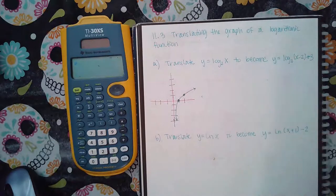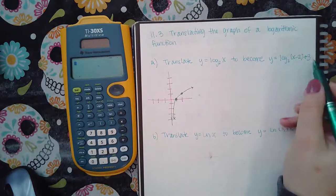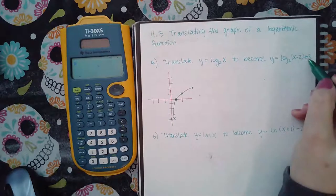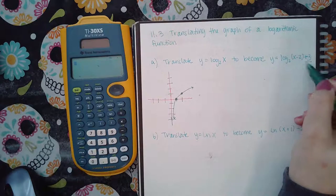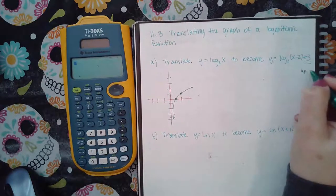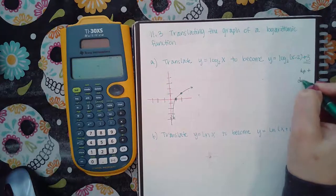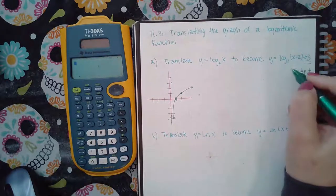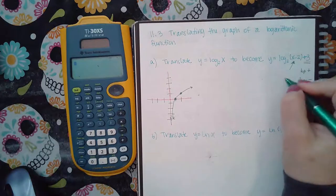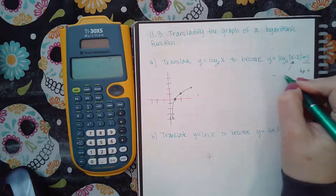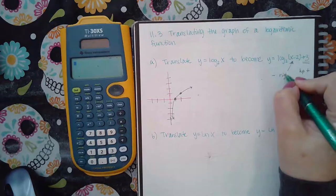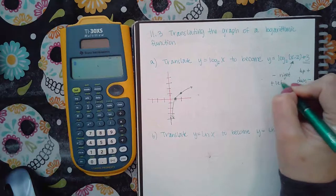So what does this translation do? Whatever is happening outside the logarithm is going to move it up if it's a plus and move it down if it's a negative. What is inside the argument, if it's minus you're going to go to the right and if it's plus you're going to go to the left.